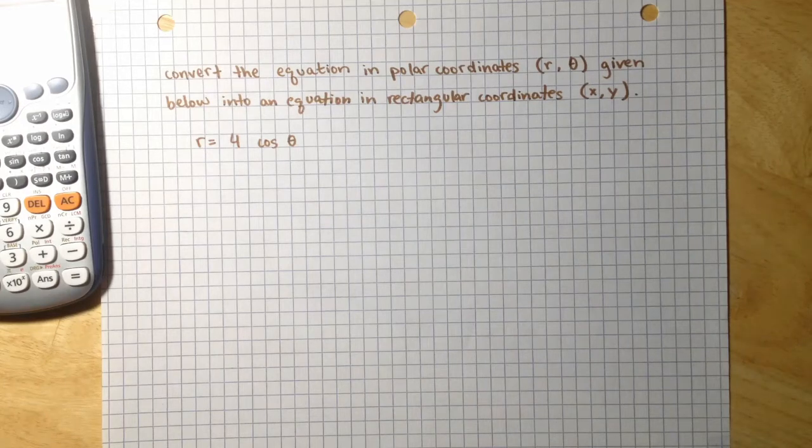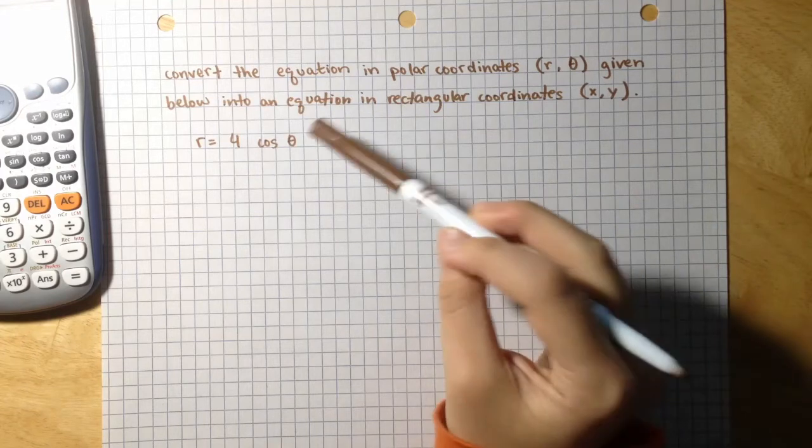We are asked to convert the equation in polar coordinates given below into an equation in rectangular coordinates. r is equal to 4 times the cosine of theta. So we have to rewrite this equation in terms of x and y.